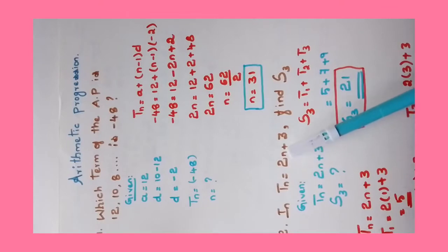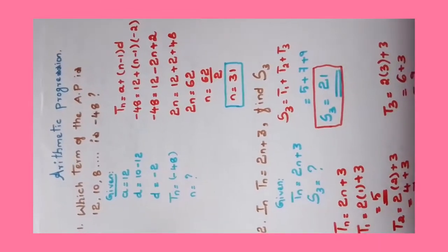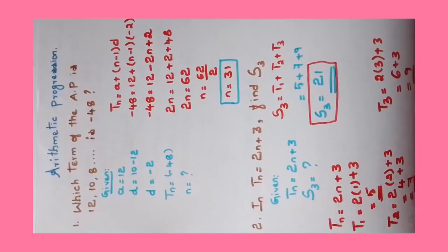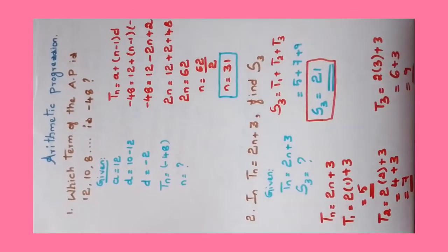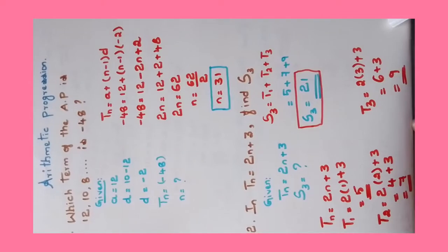If Tn = 2n + 3, find S3 value. Simple sum. What is given? Tn value is given: Tn = 2n + 3. We need to find S3 value.